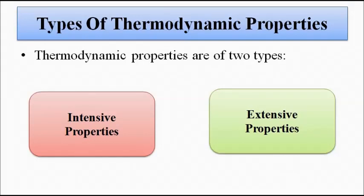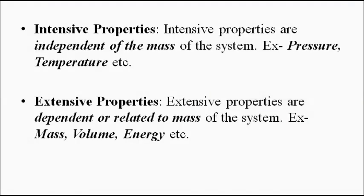Thermodynamic properties can be divided into two categories: intensive properties and extensive properties. Intensive properties are independent of the mass of the system — any change in mass will not affect them. For example, pressure and temperature. Whereas extensive properties are dependent on the mass, so any change in mass will cause a change in these properties. For example, volume, energy, mass, and density.